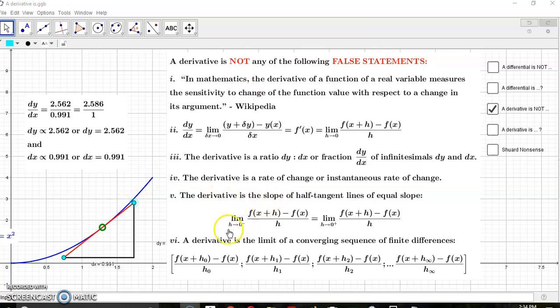The derivative is the limit of a converging sequence of finite differences. It can't be, because there is no fraction of finite differences such that this expression on the top over this expression on the bottom will give you the derivative. Notice there are many such dy/dx's and it doesn't matter where you take the slope, the derivative remains unchanged.